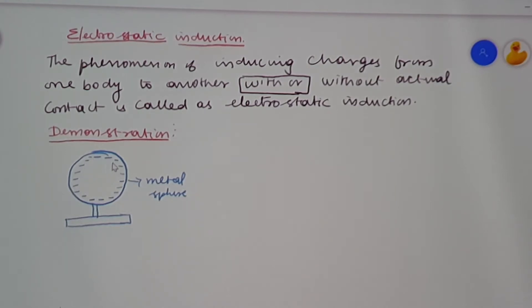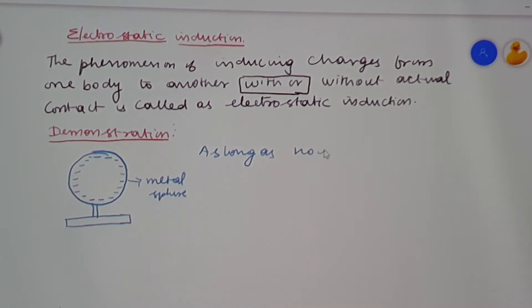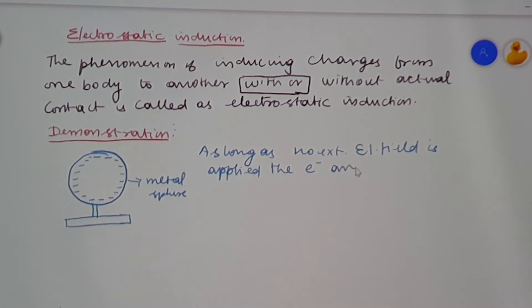As long as no external electrical field is applied to this metal spear, the charges or electrons are distributed uniformly over its surface.